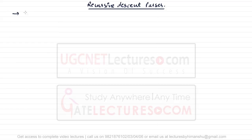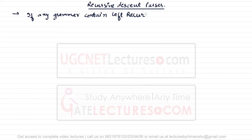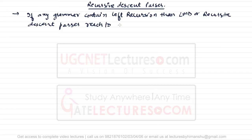These are the assumptions. If any grammar contains left recursion, then the leftmost derivation or recursive descent parser will reach an infinite loop. That means we cannot use left recursion in this recursive descent parser. So at least we need a grammar which should be right recursive.